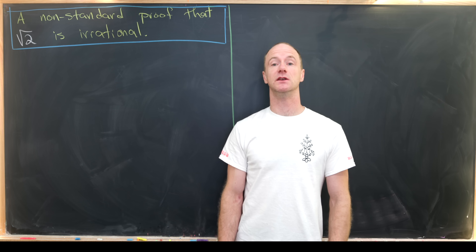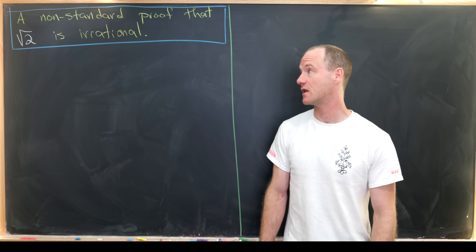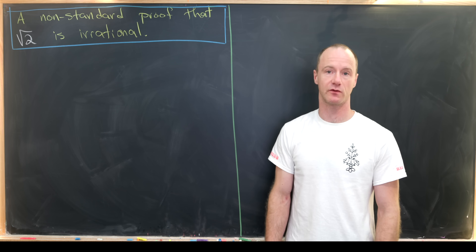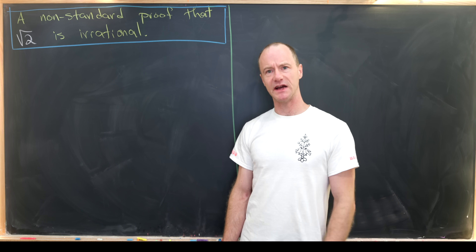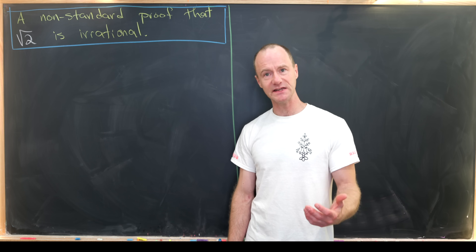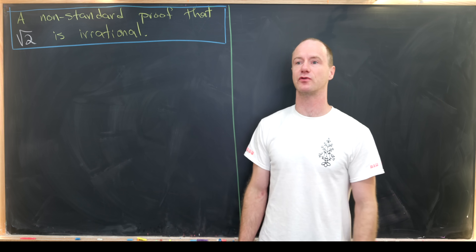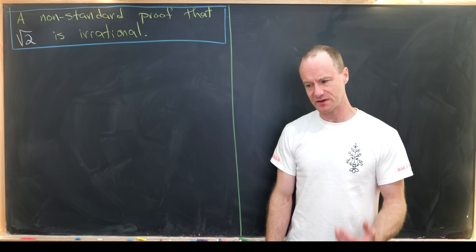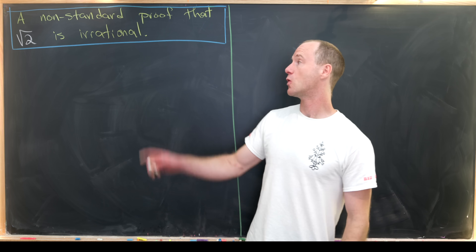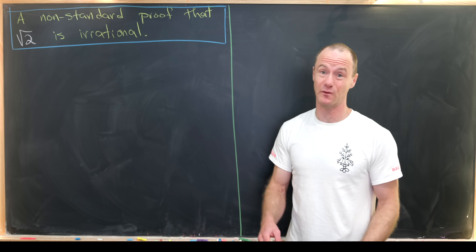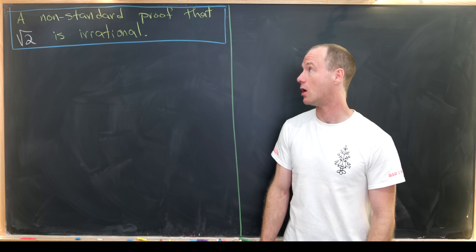Today we're going to look at a nice non-standard proof of the irrationality of the square root of two. There's something nice about this proof — the niceness comes from the fact that the standard proof actually makes use of the fundamental theorem of arithmetic, whereas this non-standard proof will not require the fundamental theorem of arithmetic at all.